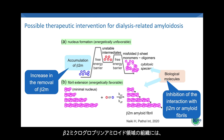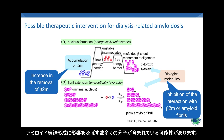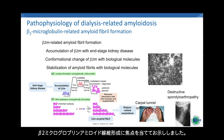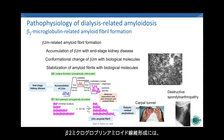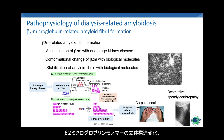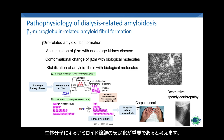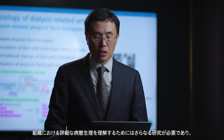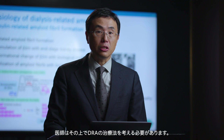Tissues in beta-2-m amyloid regions may contain numerous molecules that influence amyloidogenesis. In summary, I have presented the pathophysiology of DRA, focused on beta-2-m-related amyloid fibril formation. The essential elements of this process are: accumulation of beta-2-m with end-stage kidney disease, conformational changes of beta-2-m monomer, and stabilization of amyloid fibrils with biological molecules. Further studies will be needed to understand the detailed pathophysiology in the tissues, and physicians should consider how to treat DRA.